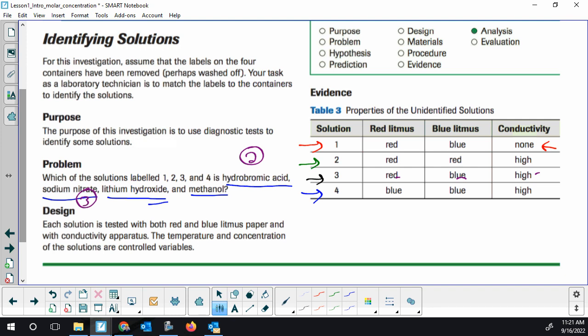Lithium hydroxide. So hydroxides in Science 10 were our bases. So we need to see B to B. So we need to see things changing color, changing to blue, staying blue, and being highly conductive. So that is number four, blue, blue, and conductive.